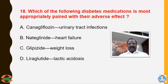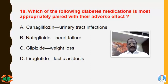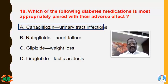Question 18: Which diabetes medication is most appropriately paired with its adverse effect? Options: (A) canagliflozin causing UTI; (B) nateglinide causing heart failure; (C) glipizide causing weight loss; (D) liraglutide causing lactic acidosis. Canagliflozin is an SGLT2 inhibitor causing glycosuria, which leads to UTI. So the right answer is option A.